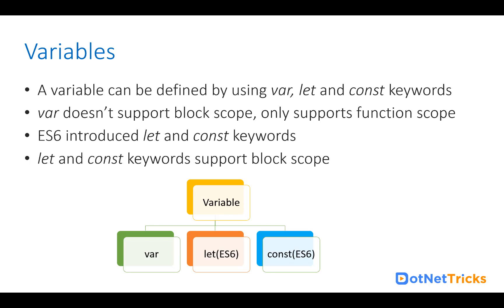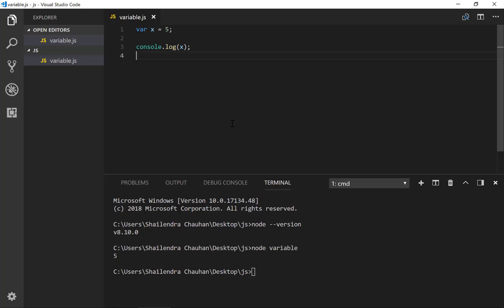If there is a requirement to define a constant — for example, a variable whose value you don't want to change throughout the application — then we use const. For example, we can define a pi constant with the value 3.14. Const is also used in JavaScript for creating objects and anonymous functions, because we don't want to change the behavior of the function assigned to the variable.